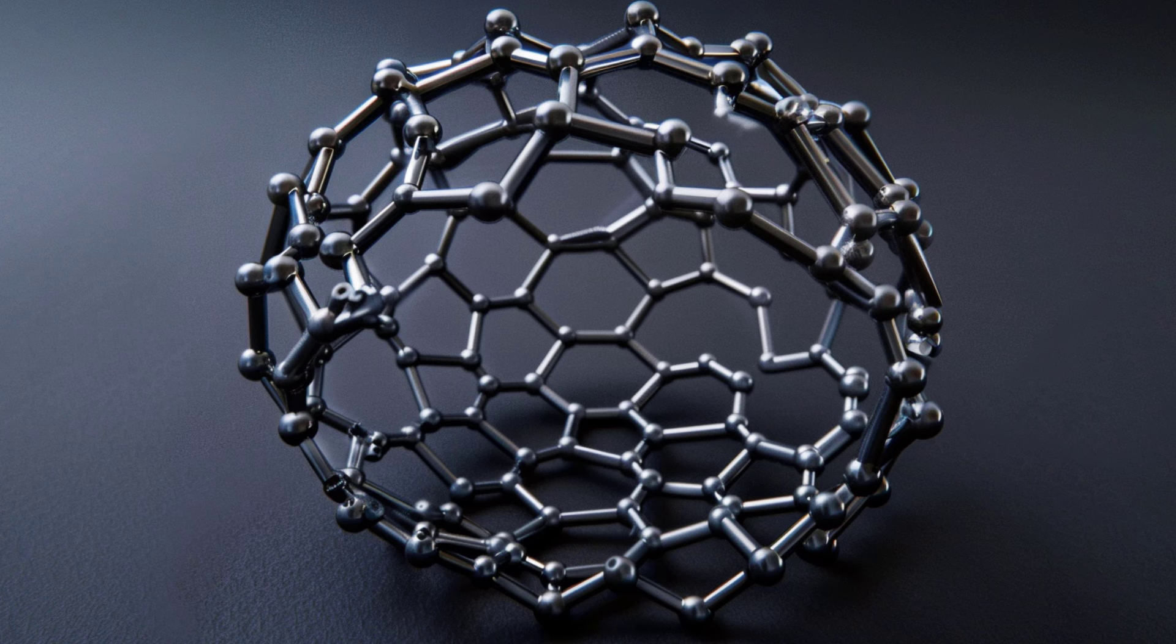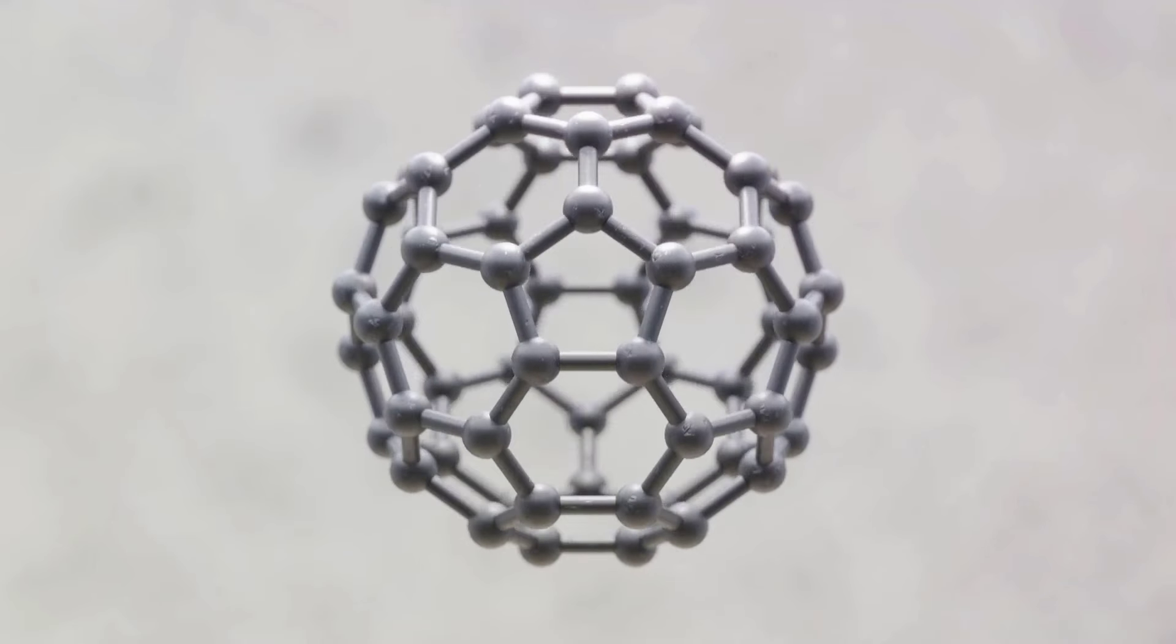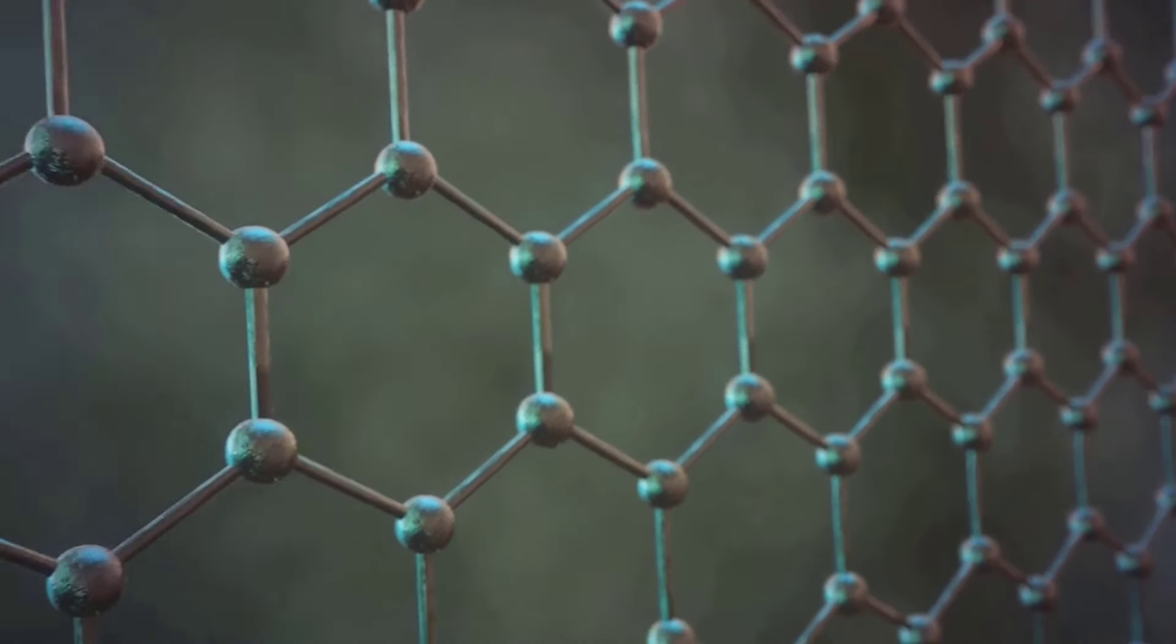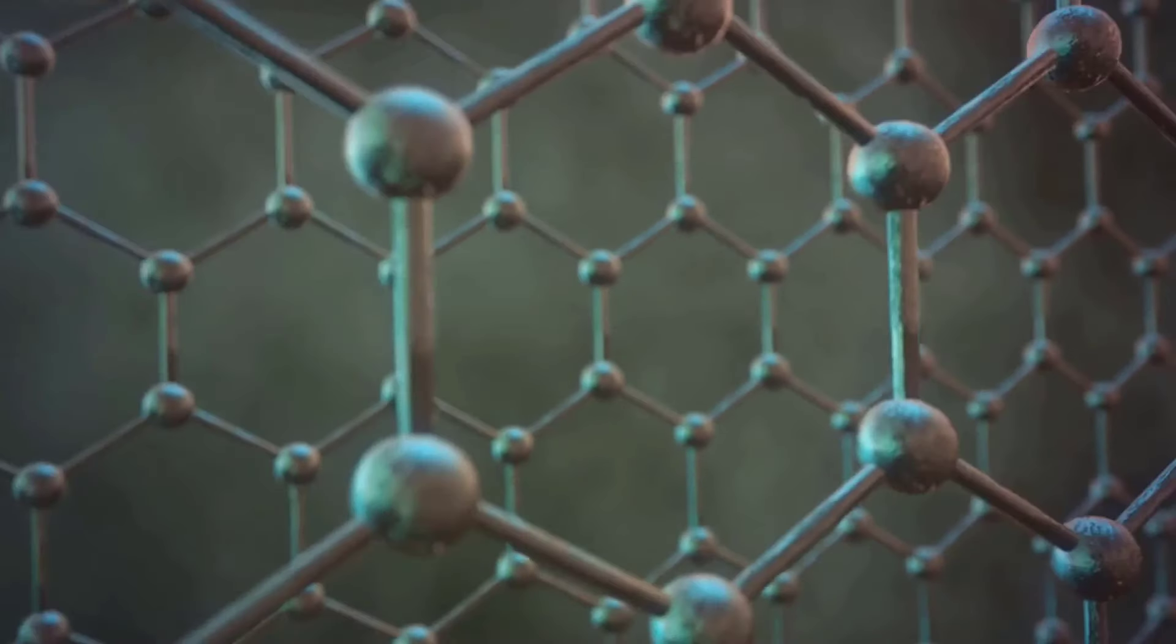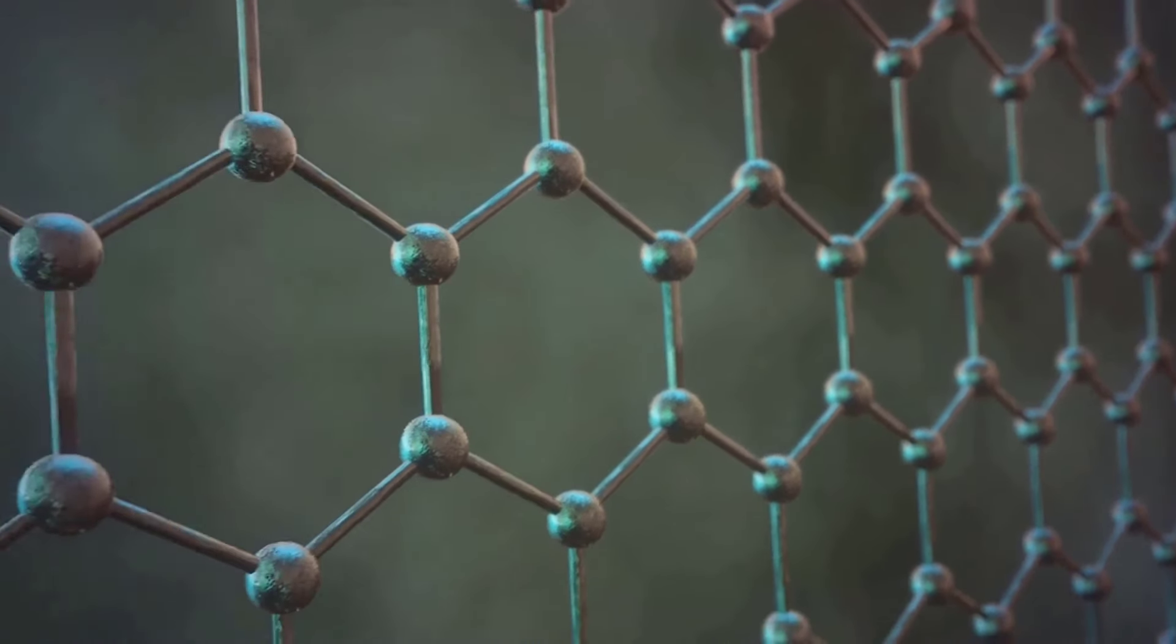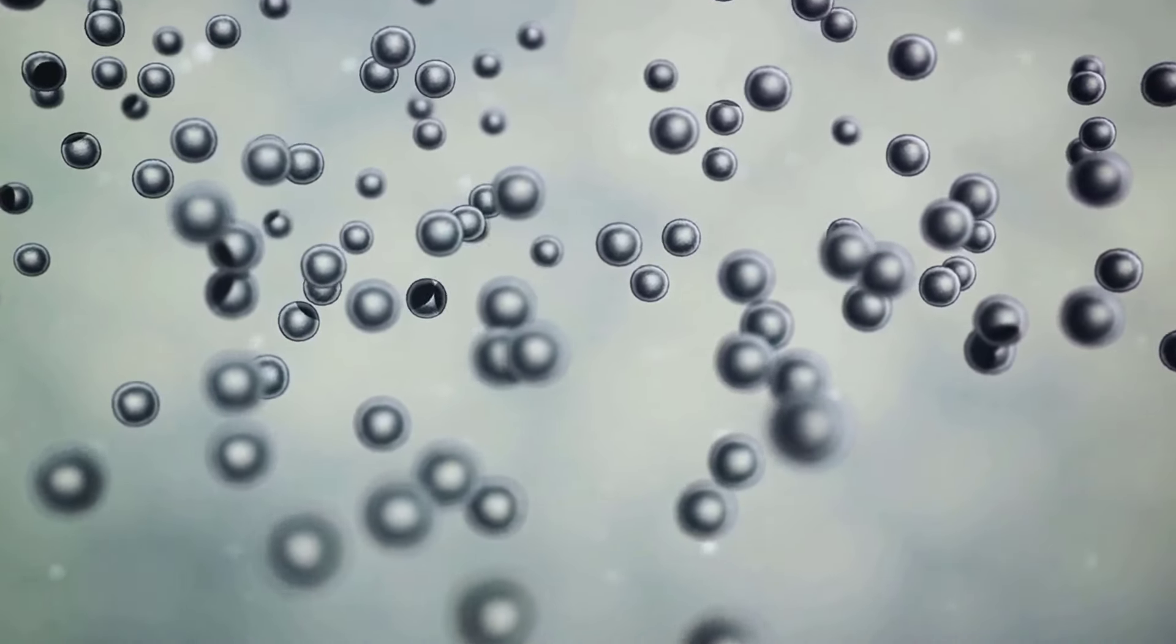Moving on to fullerenes, the molecules that resemble soccer balls. These fascinating carbon structures boast a unique architecture, where 60 carbon atoms form a hollow sphere, much like a soccer ball. This is the most common type of fullerene, referred to as C60, but fullerenes can also comprise 70, 72, or even up to 500 carbon atoms.